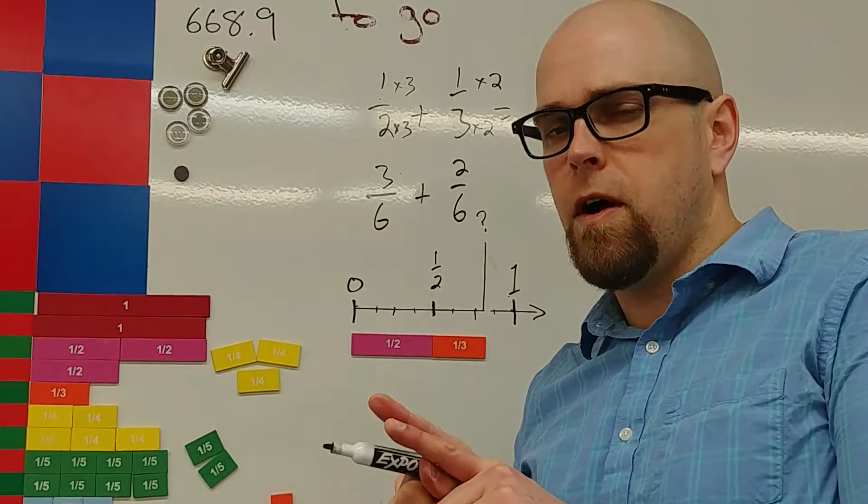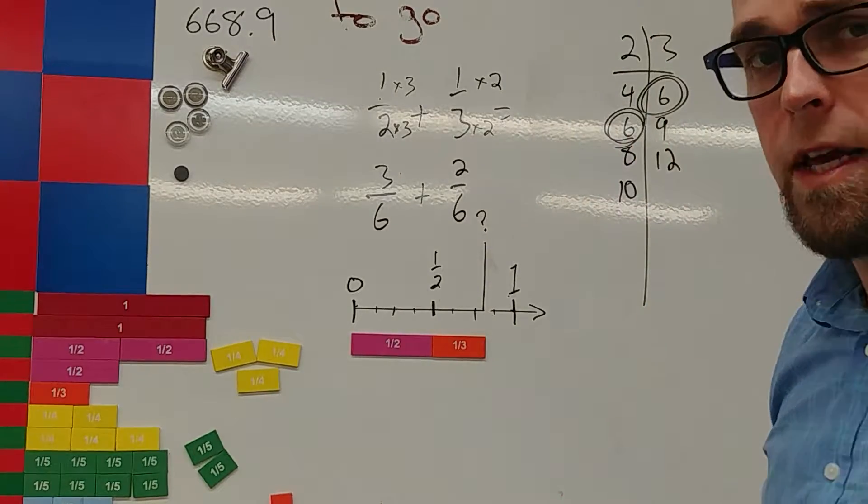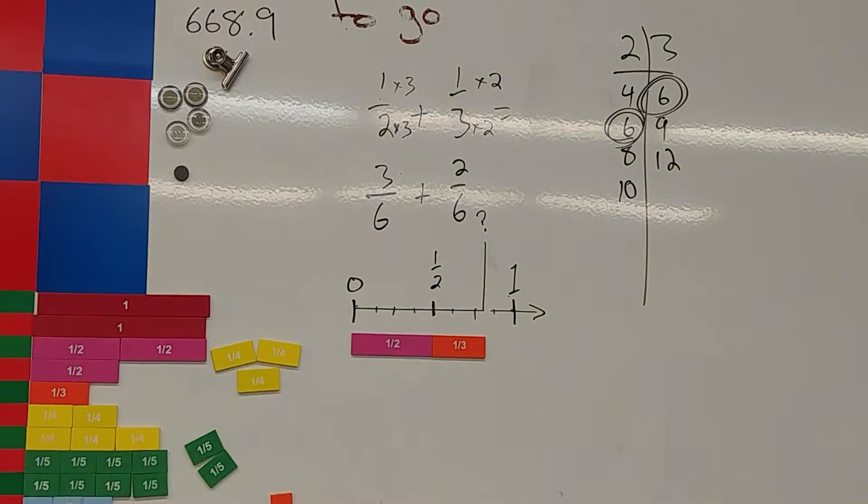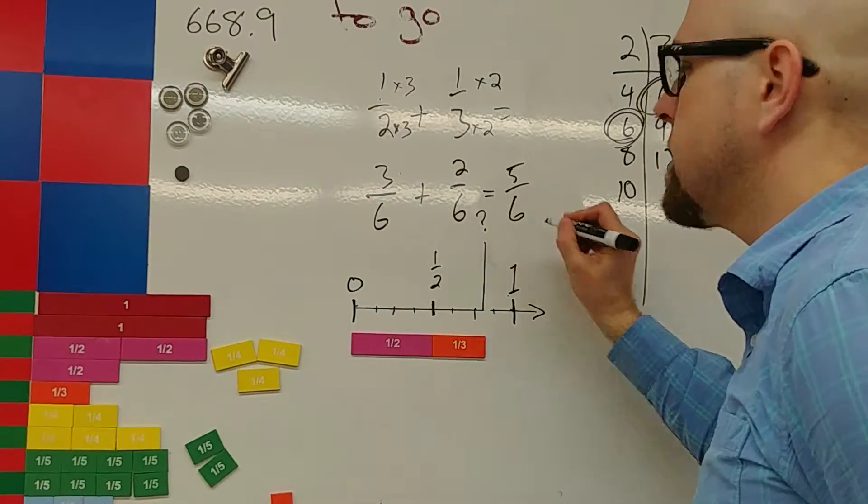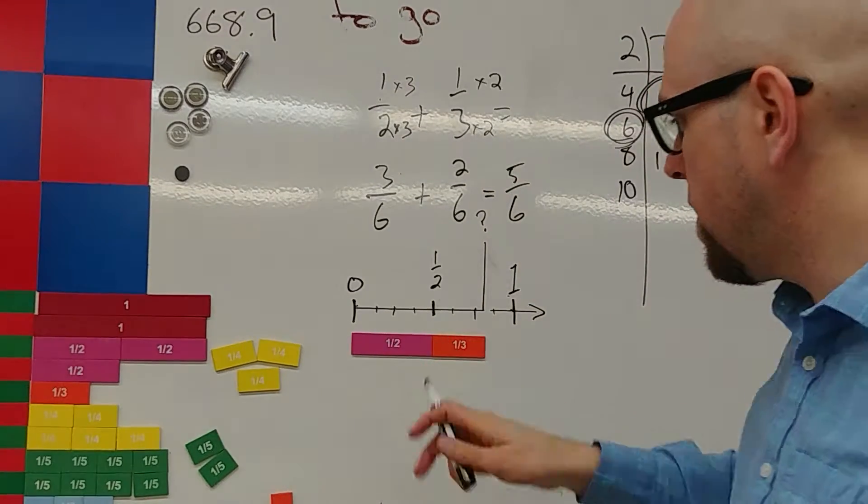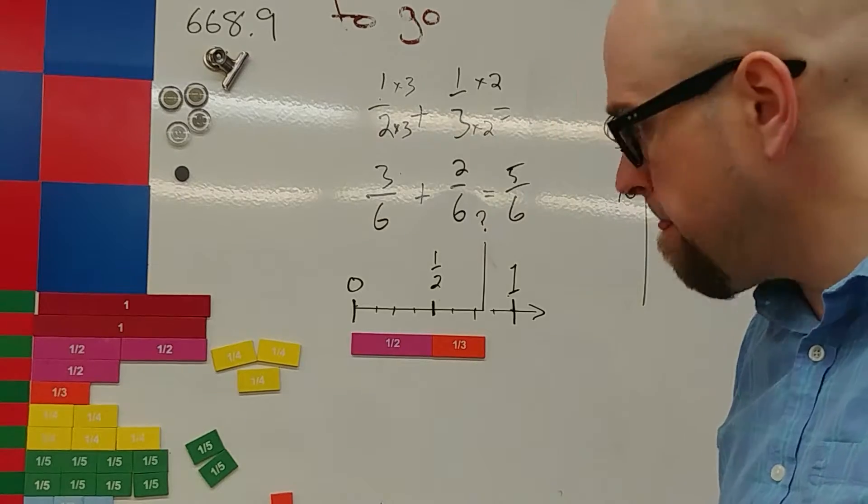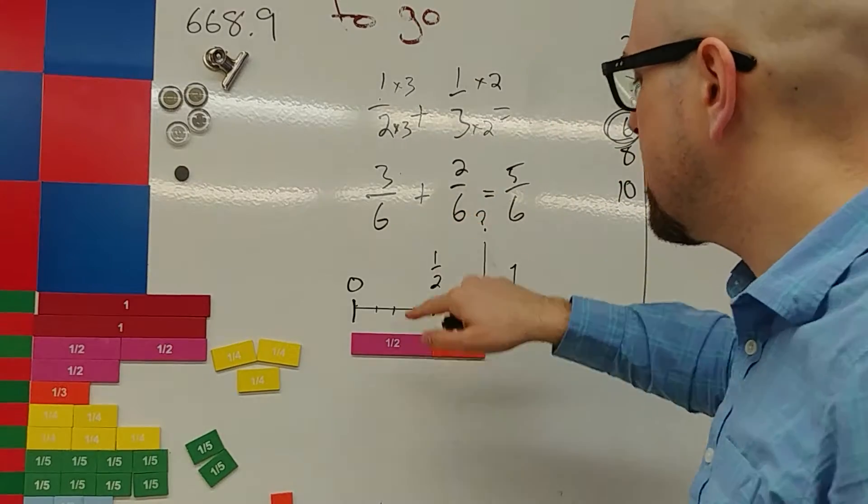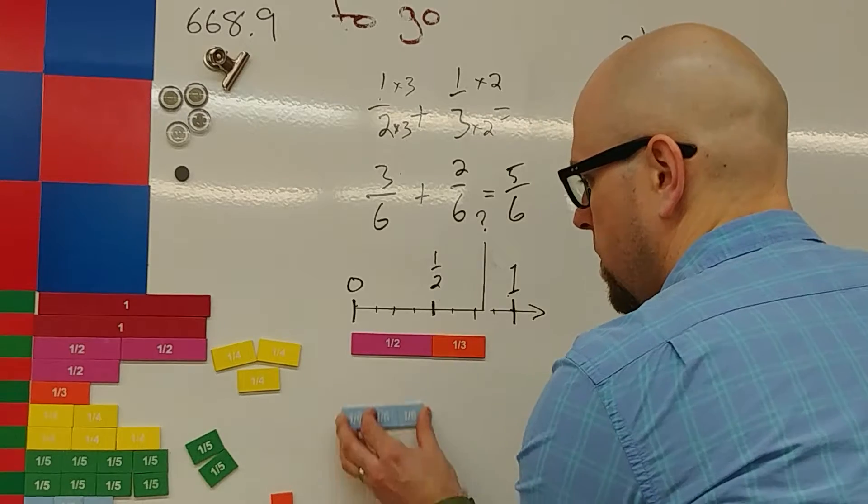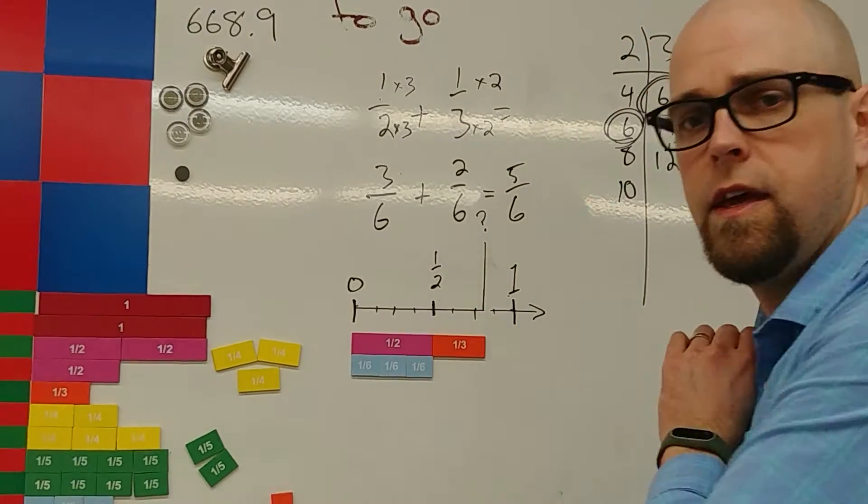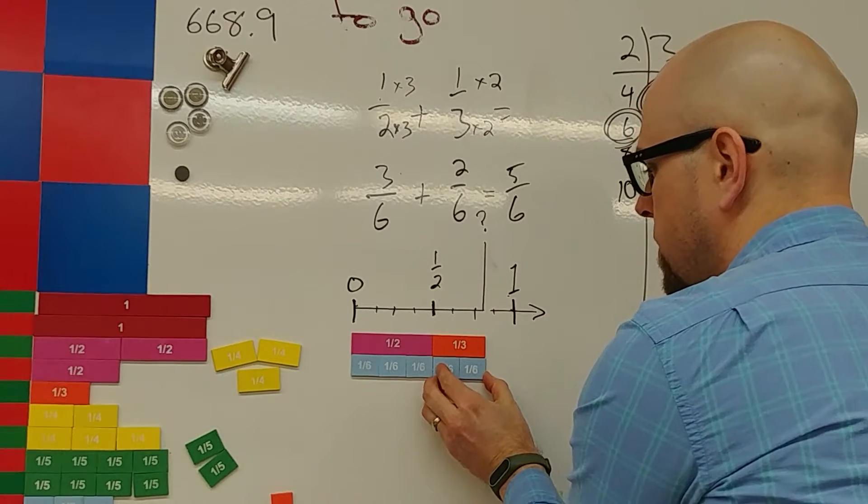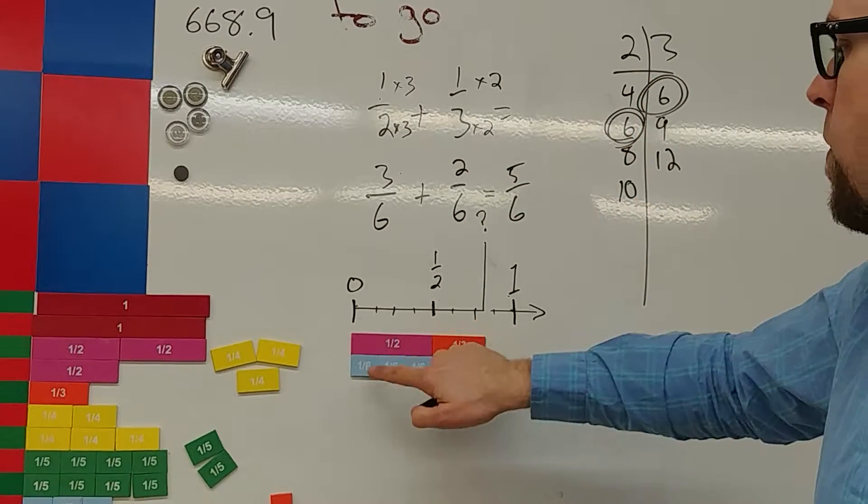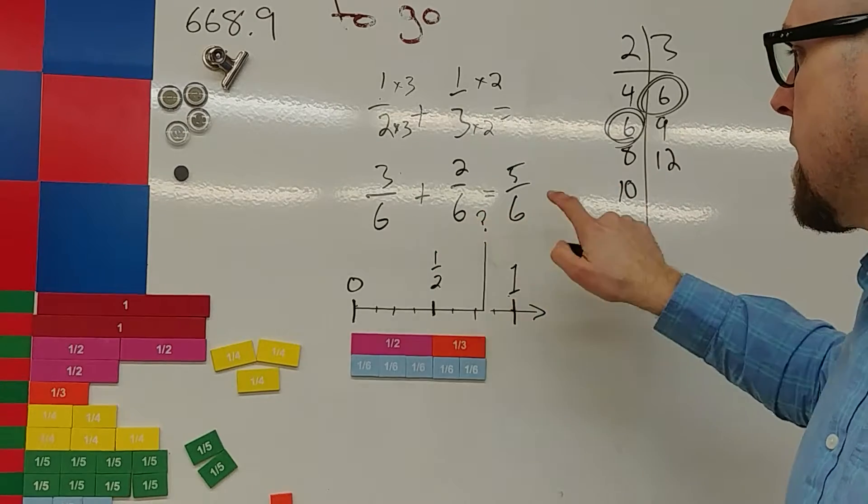Now that they're the same on the bottom, that the denominators are the same, I know that I can add them together in the classic way. Add those together. I have five over six. Now let's take a look using our fraction strips here. Three sixths is equal to one half. Let's see if that's true. Three over six. And two sixths is equal to a third. So our answer is one, two, three, four, five, six.